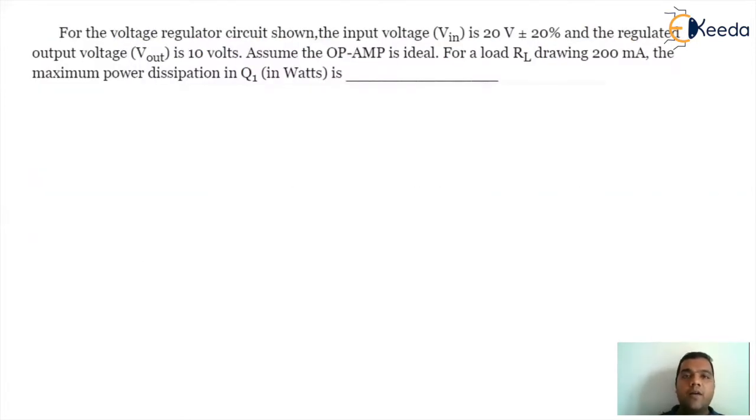For the voltage regulator circuit shown, so this is the circuitry. The input voltage VIN is 20 volt plus or minus 20 percent, and the regulated output voltage Vout is 10 volt. Assume the op-amp is ideal for a load drawing 200 milliampere. The maximum power dissipation in Q1 in Watt is... So the first important point we need to understand is that we are supposed to calculate the power dissipation of transistor Q1. That will be a product of current into the voltage of the transistor.